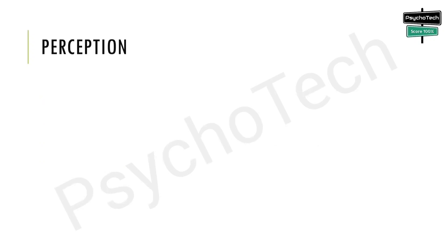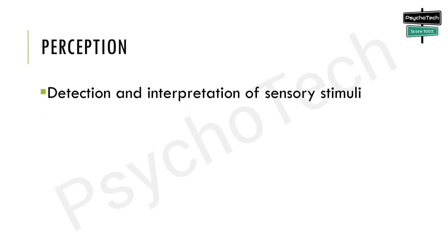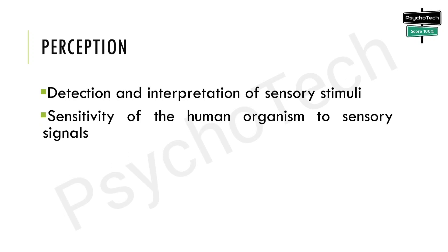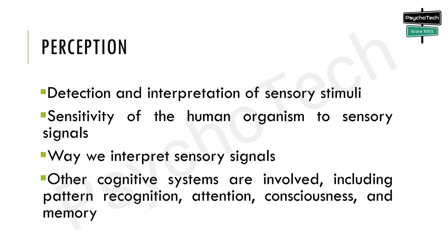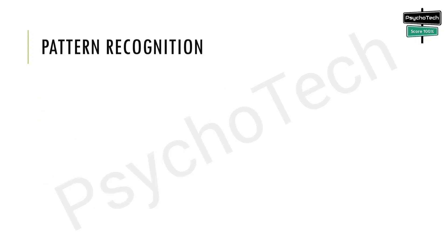The next research area is perception. The branch of psychology directly involved with the detection and interpretation of sensory stimuli is called perception. From experiments in perception we have a good understanding of the sensitivity of the human organism to sensory signals, and more importantly to cognitive psychology, the way we interpret sensory signals. The experimental study of perception has helped identify many parts of this process; however, perception alone doesn't adequately account for expected performance, and other cognitive systems are involved, including pattern recognition, attention, consciousness, and memory.